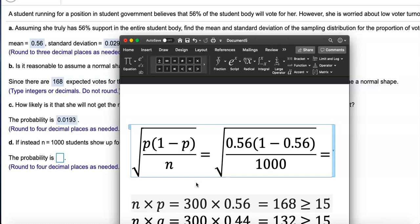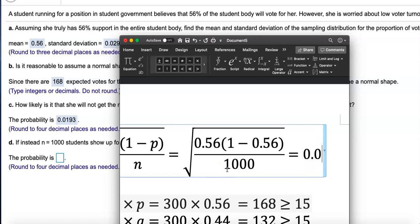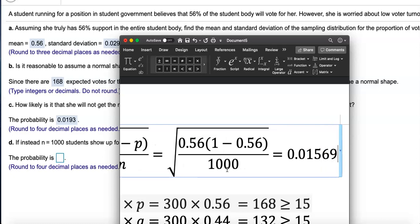We're going to have to find the standard deviation all over again. Type in square root of 0.56 times 1 minus 0.56, and we're going to divide this time by 1,000. Earlier we divided by 300, but she gets a bigger sample size. This came out to be 0.01569.